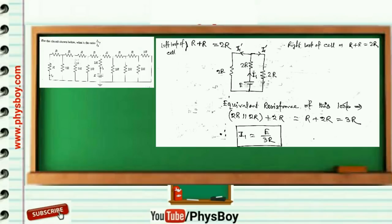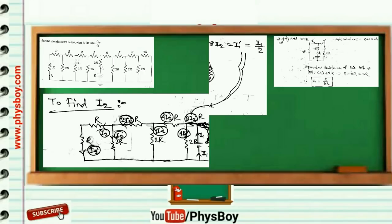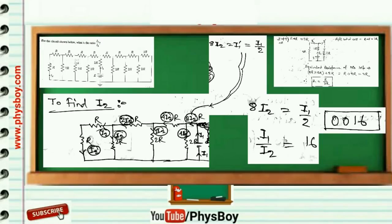Looking at the left portion of the circuit: i₁ is divided into two equal parts of i₁/2. In loop 1, i₂ current flows through R. So 2i₂ current enters from loop 2 into loop 1; 4i₂ current enters from loop 3 into loop 2; and 8i₂ current enters from loop 4 into loop 3. So 8i₂ = i₁/2, giving i₁/i₂ = 16. The final answer is 0016.